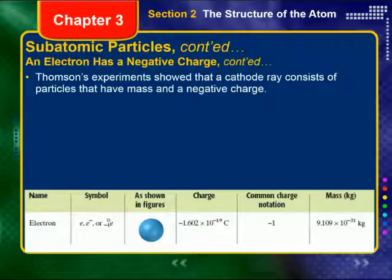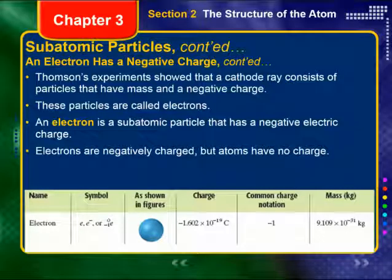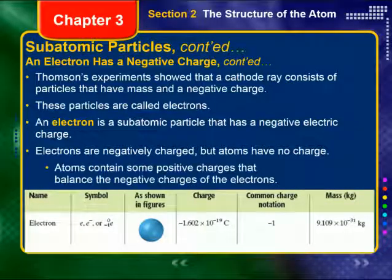Thomson's experiments showed that a cathode ray consisted of particles that have mass and negative charge. We later called these particles electrons. An electron is a subatomic particle that has a negative electric charge. Electrons are negatively charged, but atoms have no charge overall. Atoms must contain some positive charge to balance out the negative charges of the electrons. At this point, the electron is known and described. The proton is anticipated or predicted, but not actually known.